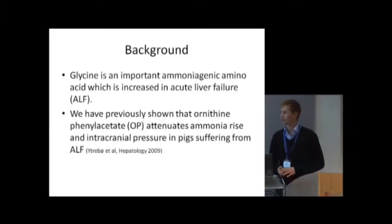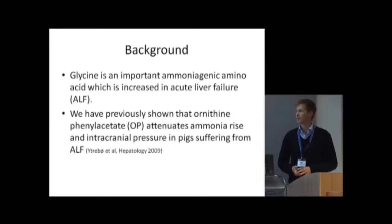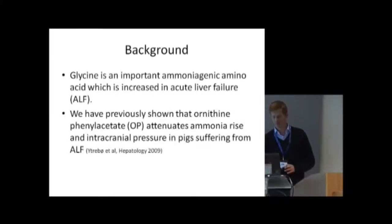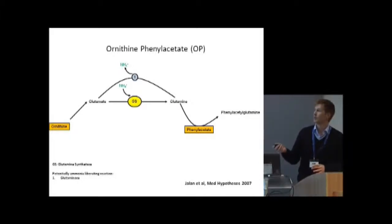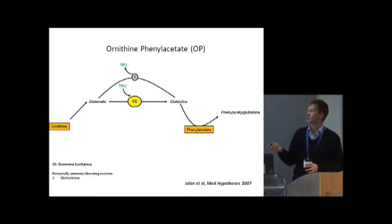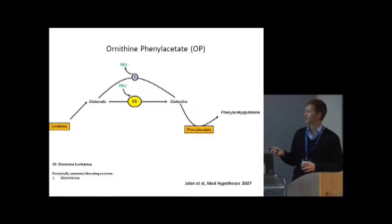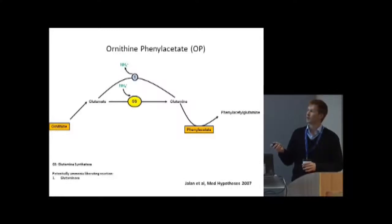We have previously shown that ornithine phenylacetate, the OP treatment, attenuates ammonia rise and intracranial pressure in pigs suffering from acute liver failure. The proposed mechanism is to increase the provision of glutamate by increasing glutamine production, capturing ammonia via the glutamine synthetase reaction, and binding glutamine to phenylacetate to remove it to urine as phenylacetylglutamine, thereby preventing a possible rebound hyperammonemia due to glutaminase.